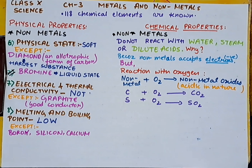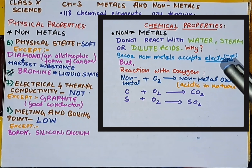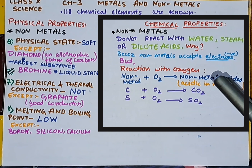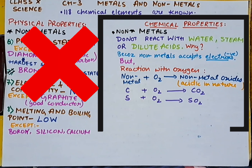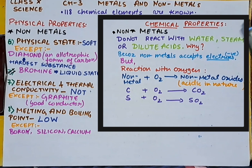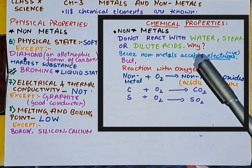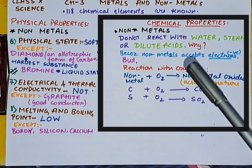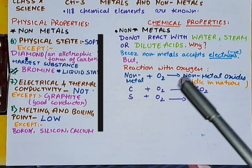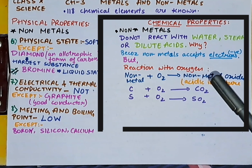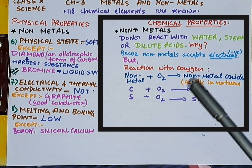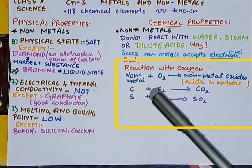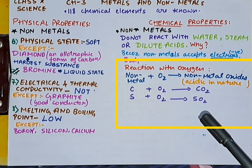Coming to the chemical properties of non-metals: non-metals do not react with water, steam, or dilute acids. This is because non-metals accept electrons and have negative ions. However, non-metals can react with oxygen — when they do, they form non-metal oxides that are acidic in nature. For example, carbon + oxygen gives carbon dioxide (CO₂), and sulfur + oxygen gives sulfur dioxide (SO₂).